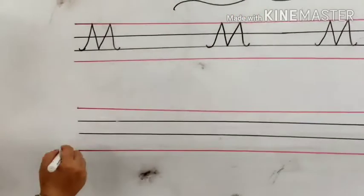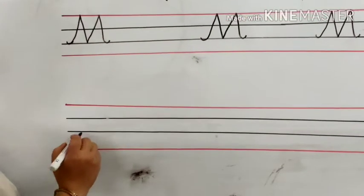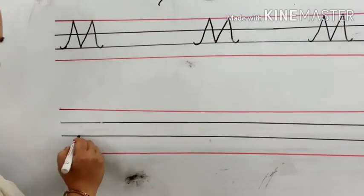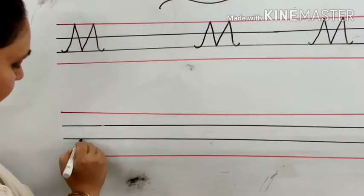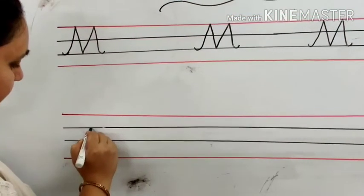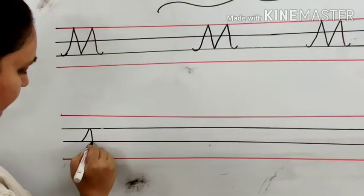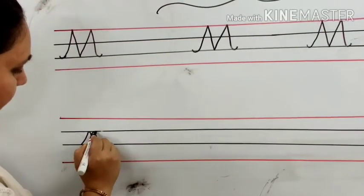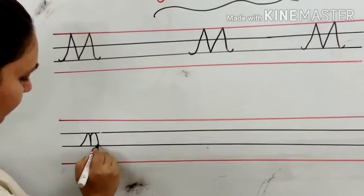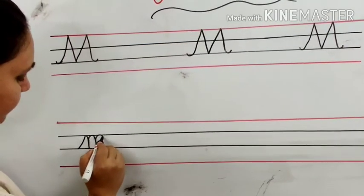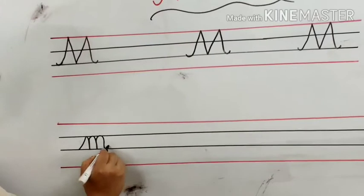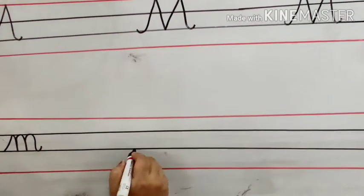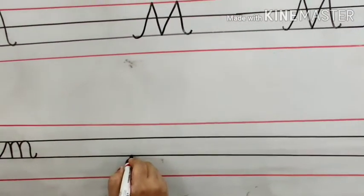Next we will draw small cursive M. Small cursive M will start from the third line. Draw a slant line, then draw a curve, again a curve, and draw a slant line.